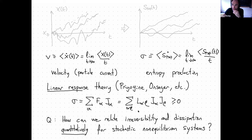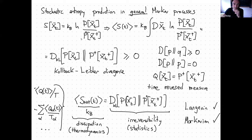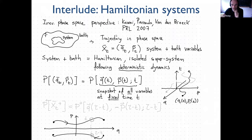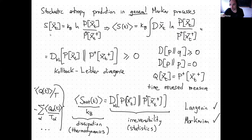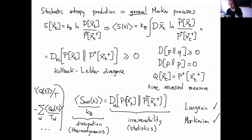We know something about this. We know that the stochastic entropy production associated with a single trajectory can be written as k_B times the logarithm of the probability for a trajectory divided by the probability in the time-reversed process of the time-reversed trajectory. When you average this over many trajectories, you get a Kullback-Leibler divergence between the probability of the trajectory and the probability to see the time reversal in the time-reversed process. From information theory, we know this is always positive, and it is zero if and only if the two measures are the same — that is, only in equilibrium.